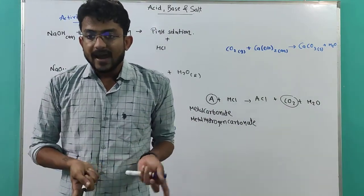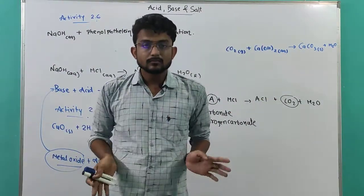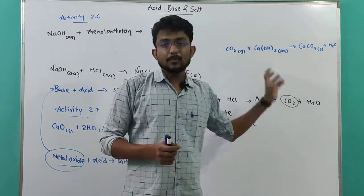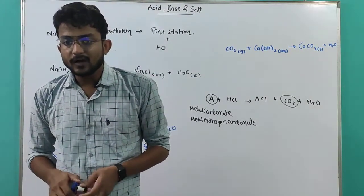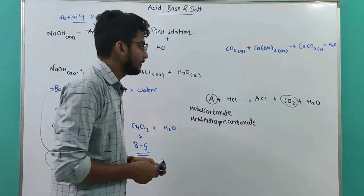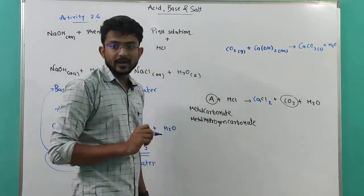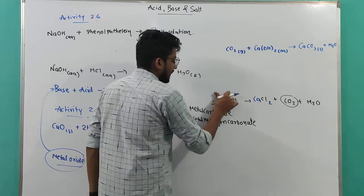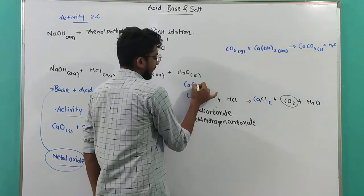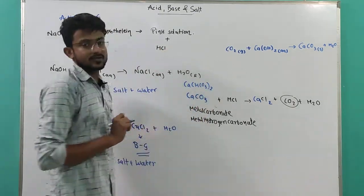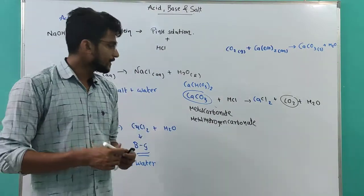Effervescence always indicates carbon dioxide. So compound A is either a metal carbonate or metal hydrogen carbonate. The gas evolved extinguishes a burning candle — confirming it's carbon dioxide. If one of the products is calcium chloride (CaCl2), then the compound taken was either CaCO3 or Ca(HCO3)2. The most likely answer is CaCO3 — calcium carbonate. Write the balanced equation accordingly.